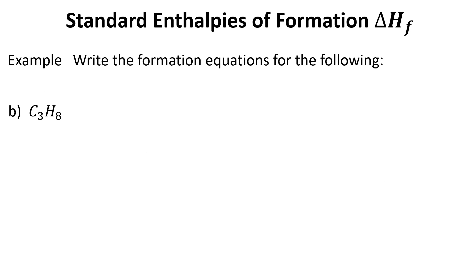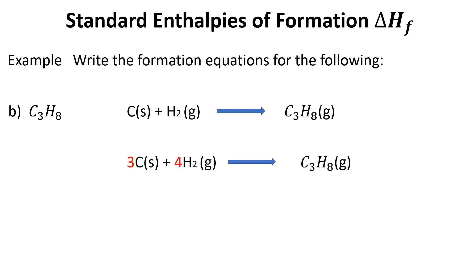Let's try another example: propane. We have carbon in its solid state plus hydrogen gas. Propane — like in the tank for your barbecue — is in the gaseous state. We balance this equation, and it actually works out to one mole of propane already, so we're done.